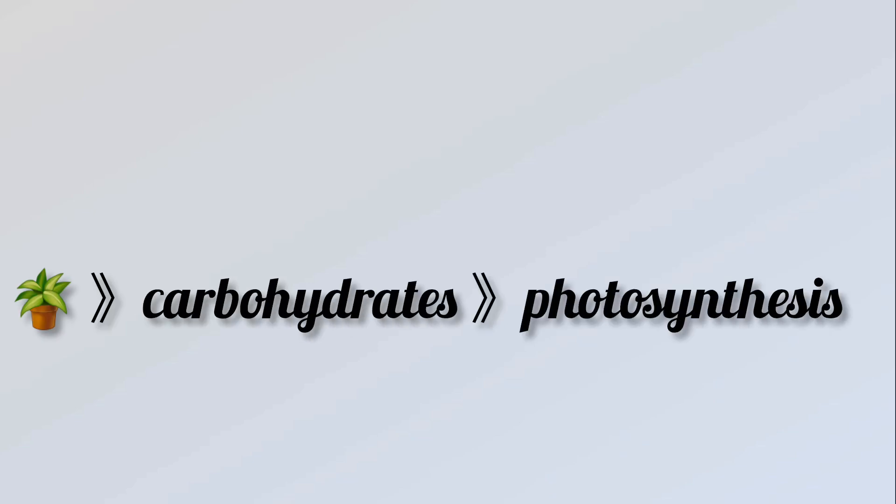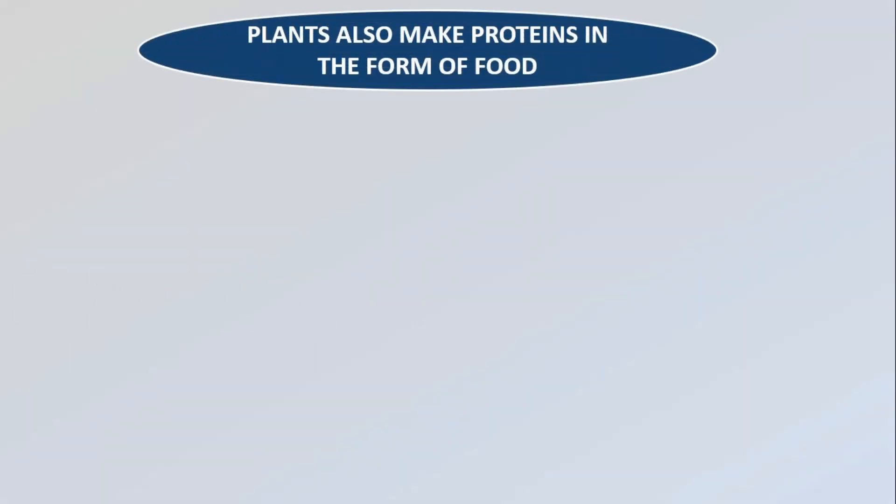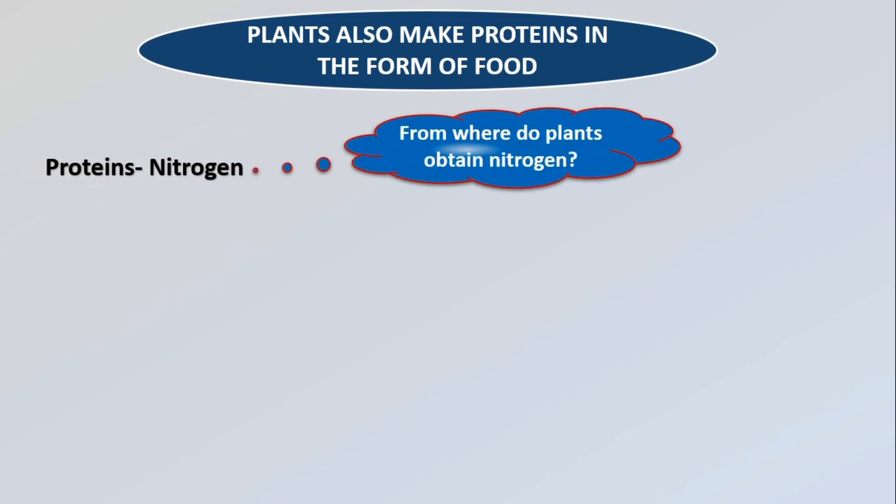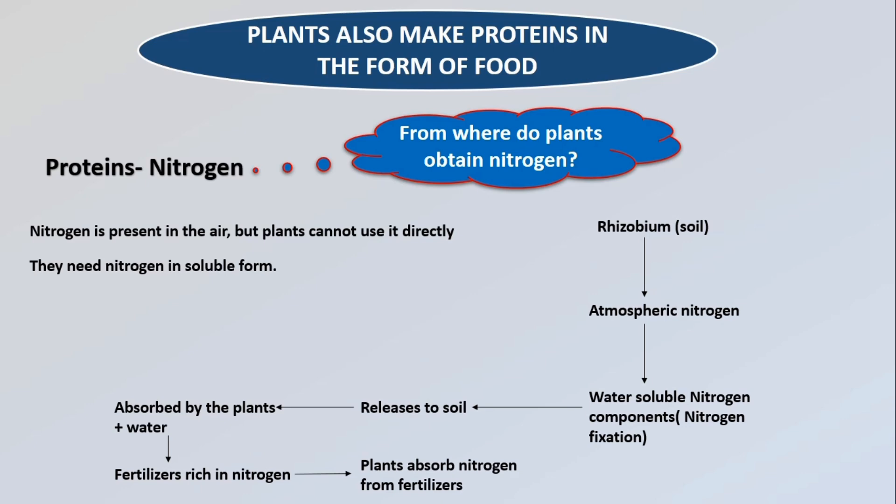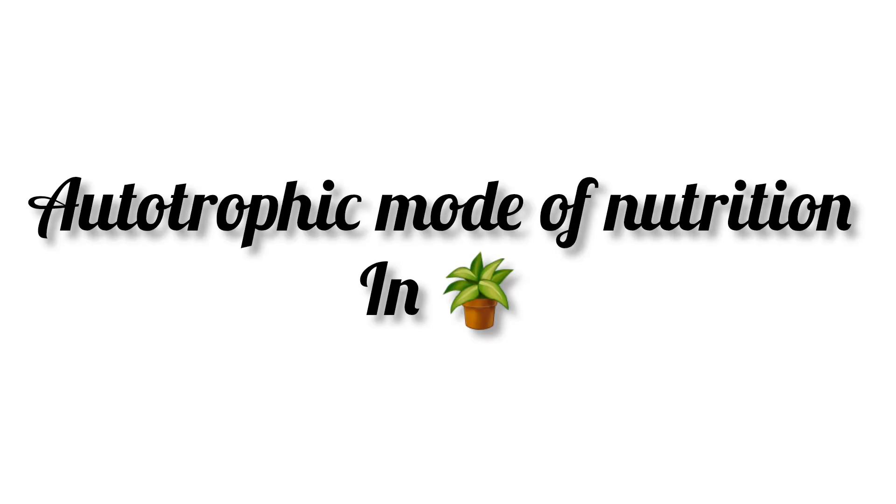Plants synthesize carbohydrates through photosynthesis, but they can also synthesize other components such as proteins and fats. Proteins contain nitrogen. Soil has certain bacteria called rhizobium bacteria which can take atmospheric nitrogen and convert it into water-soluble nitrogen compounds like nitrates and release it into the soil. These nitrates are absorbed by the plants along with water. Also, plants absorb nitrogen from fertilizers. Plants also synthesize vitamins which are found in vegetables, fruits and cereals.